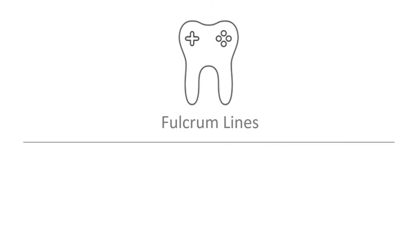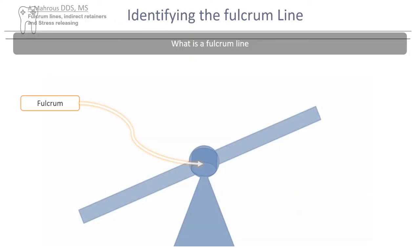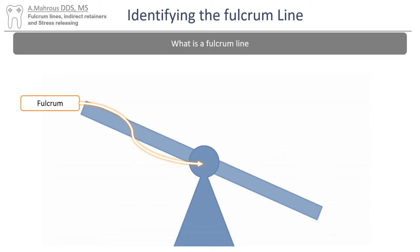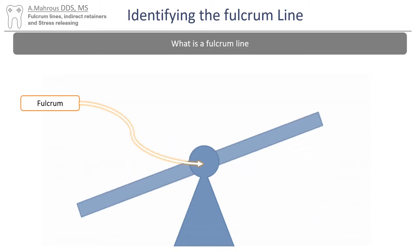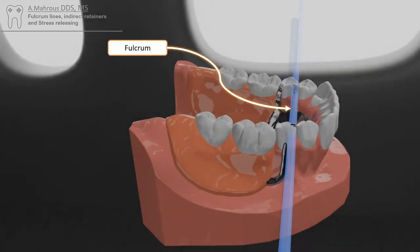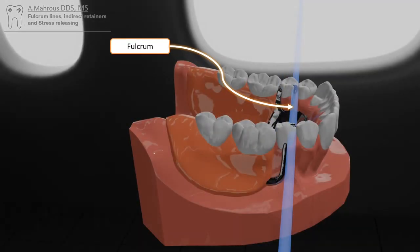Let's start with understanding what fulcrum lines are. A fulcrum is defined as the point on which the lever rests and on which it pivots. In removable partial dentures, the fulcrum line is defined as an imaginary line connecting the terminal rests in Class 1, 2, and long span Class 4 RPDs, about which the RPD may rotate.